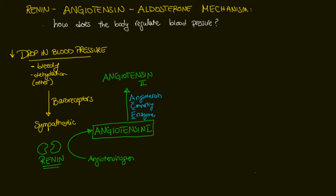Here is where you really want to pay attention, because angiotensin 2 has four effects we're going to study. Any negative feedback homeostatic mechanism needs to oppose or negate the initial stimulus, so we are looking for four mechanisms of action that are going to increase blood pressure in order to reverse the drop.